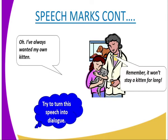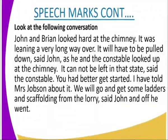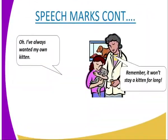You can also see from the above pictures these are the words spoken by different speakers. We can see a picture of someone who looks like a parent and a child. The child says, 'Oh, I've always wanted my own kitten.' And the response, in italics, reads: 'Remember, it won't stay a kitten for long.'